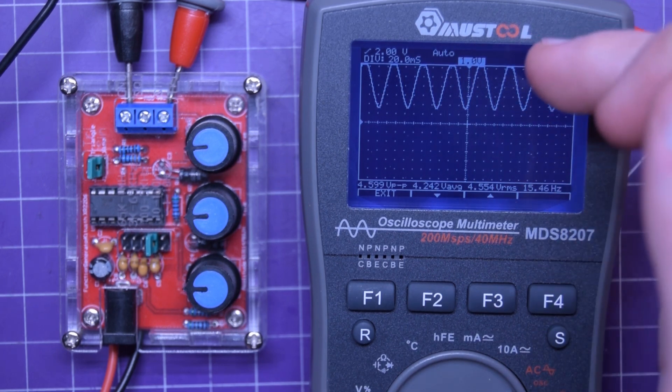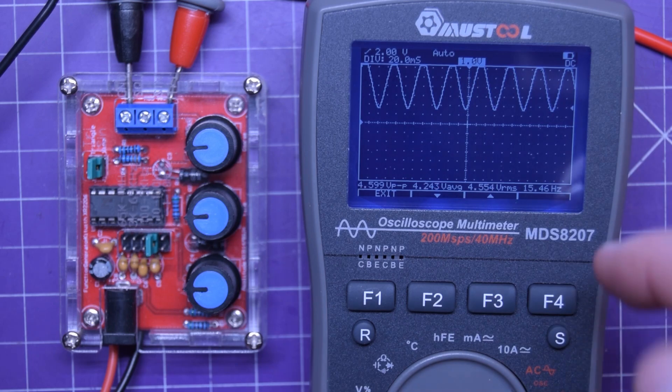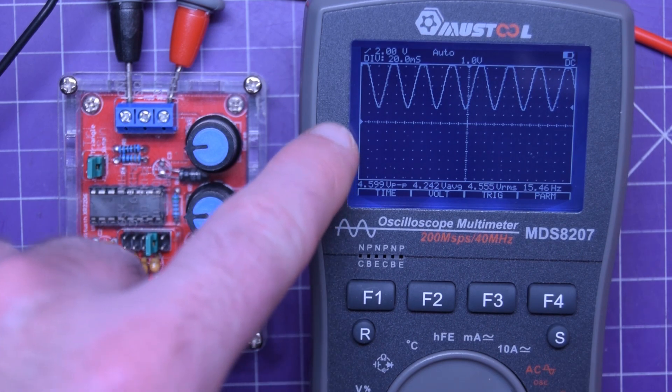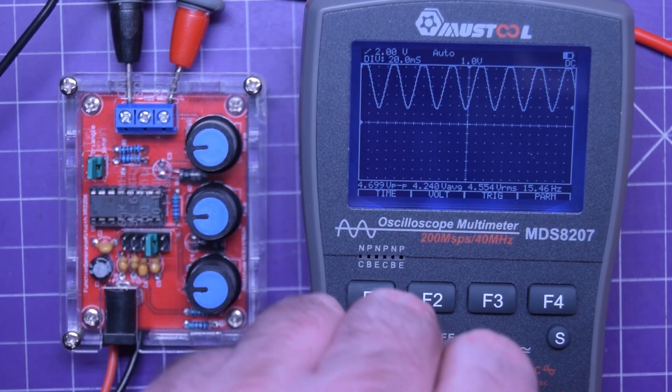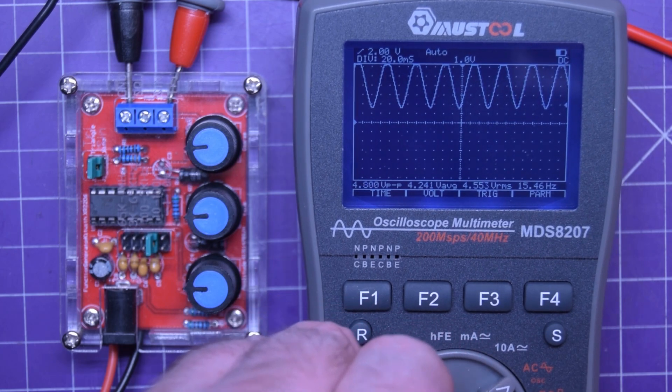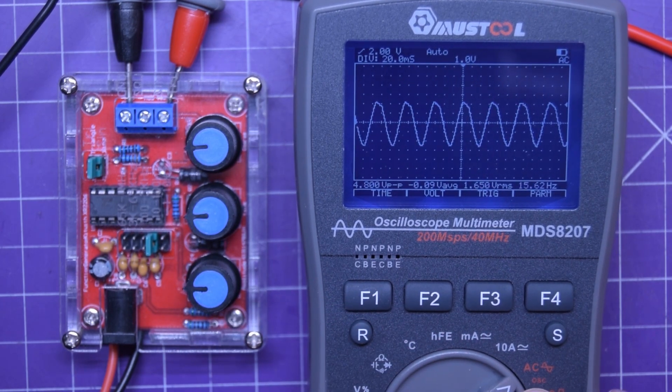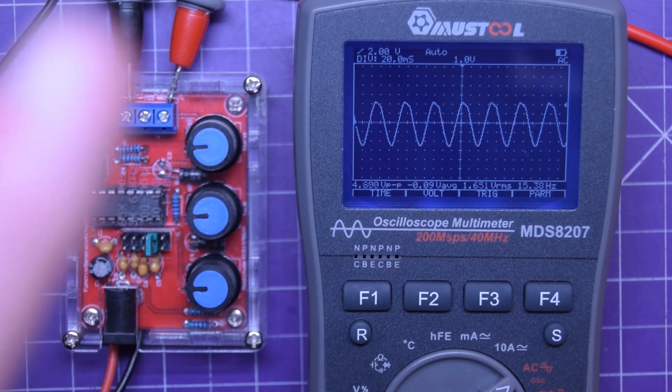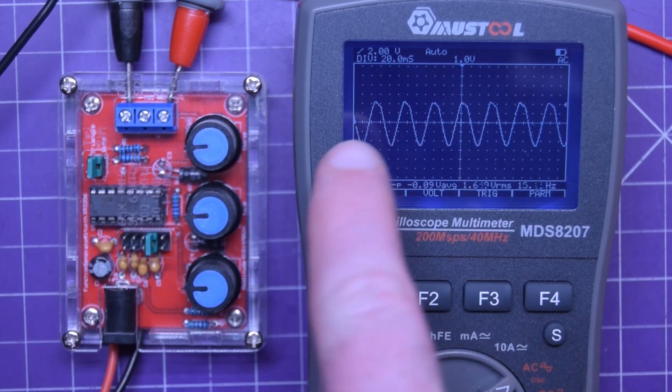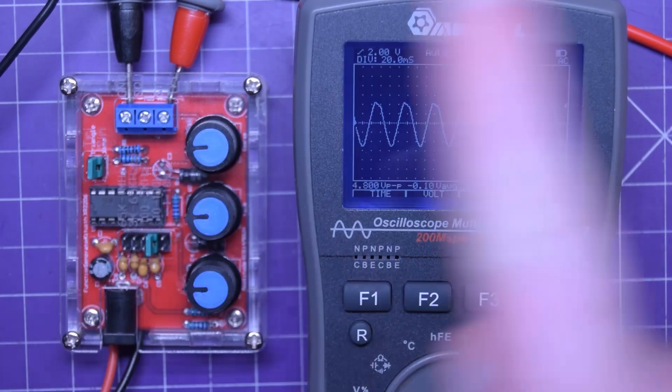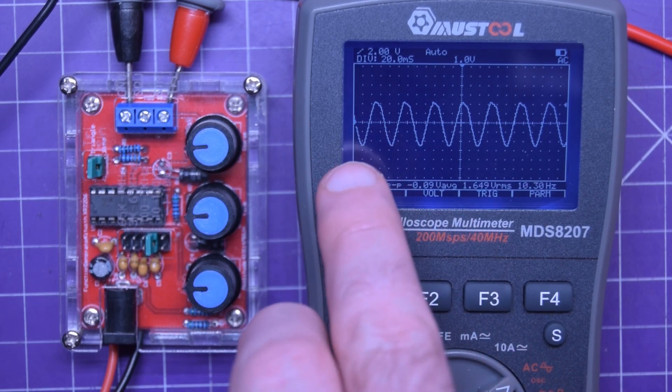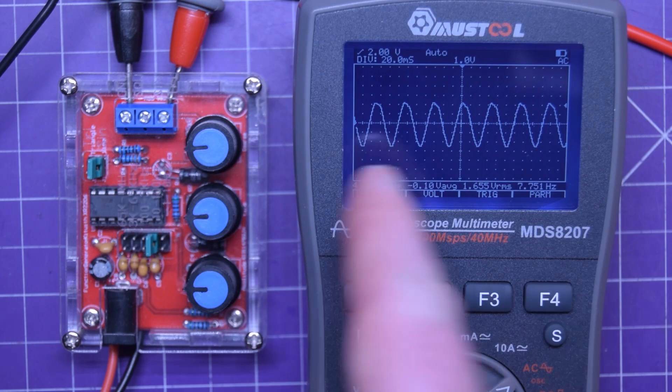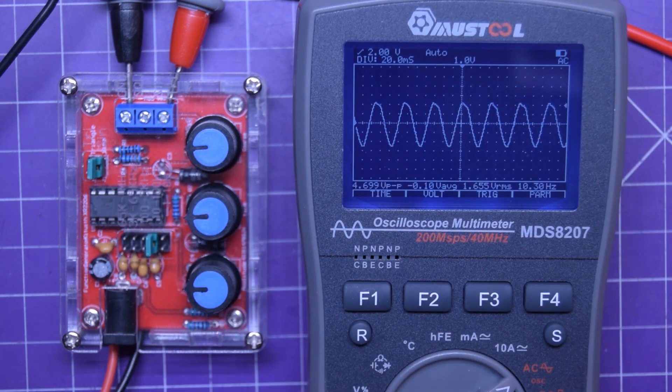This is the biggest fault that this device has. You cannot bring the waveform down. You can't adjust it downwards. It always, if you have a DC offset, your wave is going to be up. The only way to center it is to move it to the AC coupling mode and then it's centered. But if you have a DC waveform, like full-on DC where it just goes up and down and you want to log it, it will not work for you because you cannot bring it down. You can move the waveform left to right, but you cannot move it up and down.